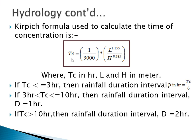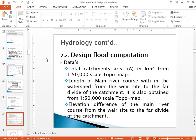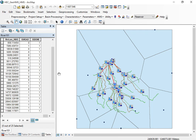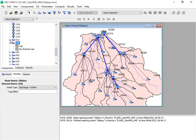After you have determined the time of concentration, you should determine the lag time in minutes. The lag time equation is: lag time equals 0.6 times the time of concentration. Since the time of concentration is in hours, you can convert the units into minutes. I hope you have some background on this from hydrology. Let us now determine our lag time for our practical section.